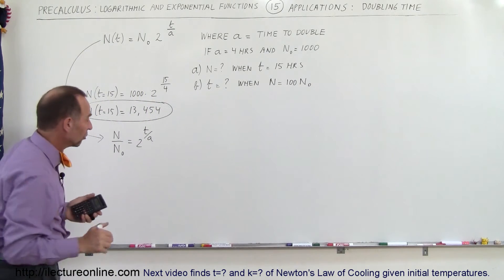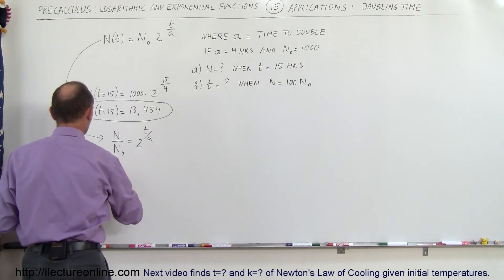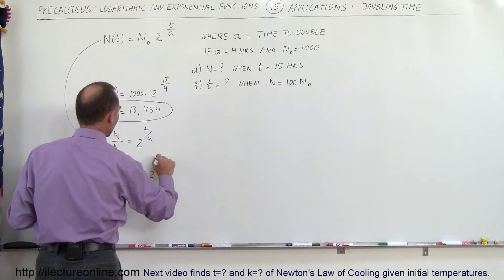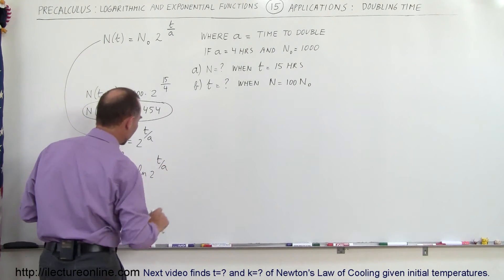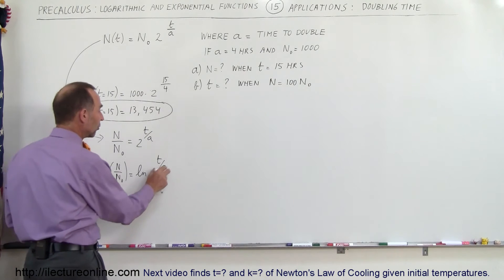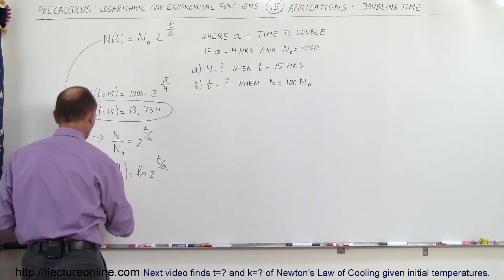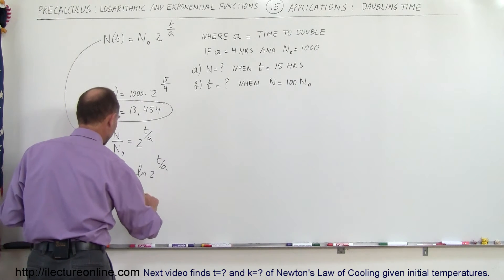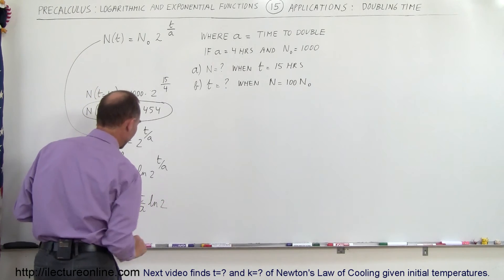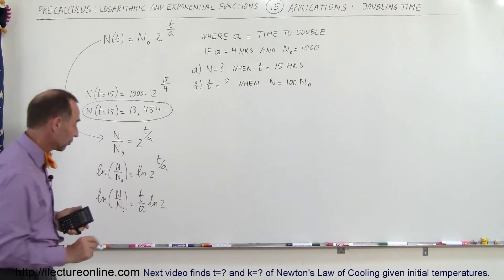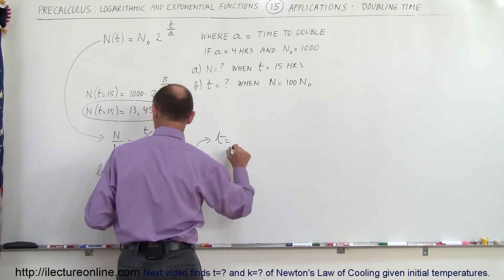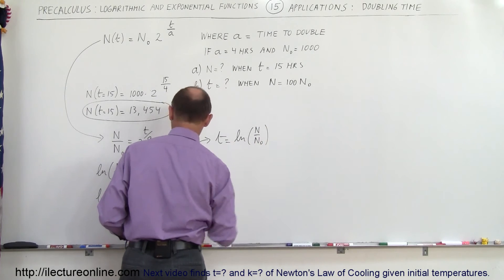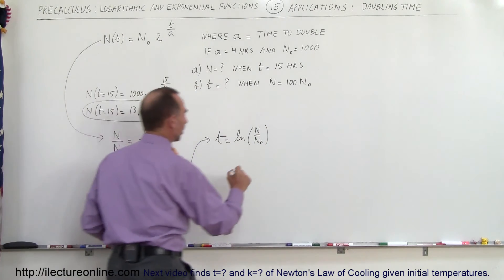The next thing we're going to do is take the natural log of both sides. So the natural log of n divided by n sub naught is equal to the natural log of 2 raised to the t over a power. Remember, whenever we have a logarithm of something raised to an exponent, that exponent can move to the front. So we can write: the natural log of n over n sub naught is equal to t over a times the natural log of 2. Finally, we can solve for t: t is equal to the natural log of n over n sub naught, multiplied by a and divided by the natural log of 2.